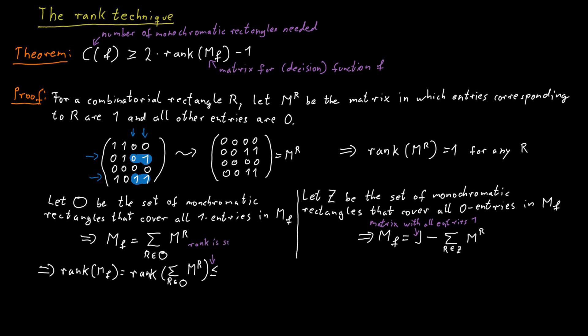So the rank of MF clearly is just the rank of the sum of R in O over MR. And the rank is sub-additive, meaning that we can pull the rank function into the sum and the result is a quantity that only gets bigger. That's a simple fact from linear algebra. So this is less or equal to the sum over R in O of rank of MR. And we know that the rank of MR is one. So what's written here is really just the size of the set O.